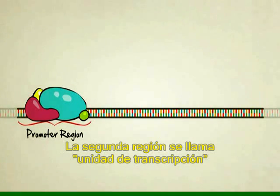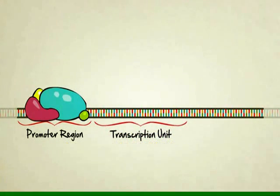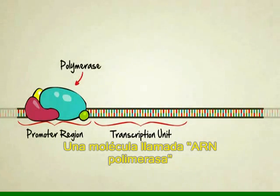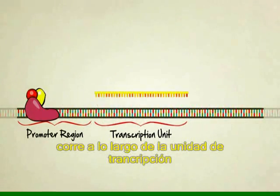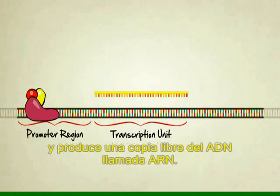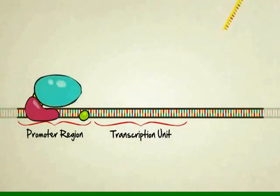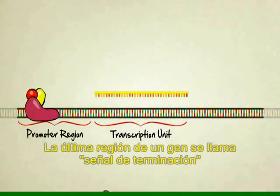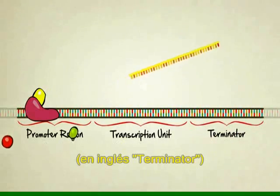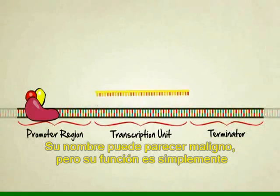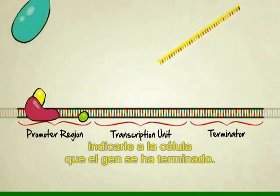The second stretch of code, called the transcription unit, is the piece that actually tells the cell how to build proteins. A chemical structure called the polymerase runs across the transcription unit and builds a free-floating copy of the gene called RNA. The RNA then goes on to build proteins. The last stretch of code found on a gene is called the terminator. The name might sound a little malicious, but its purpose is simply to tell the cell that the gene has come to an end.